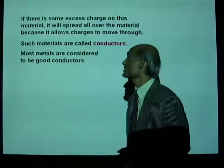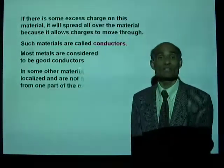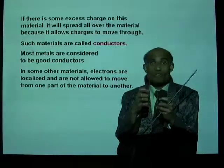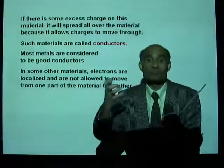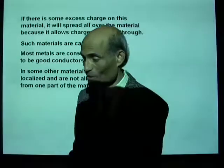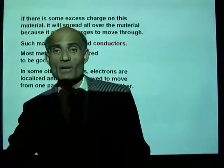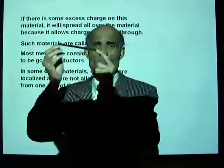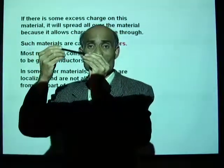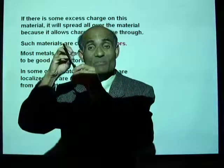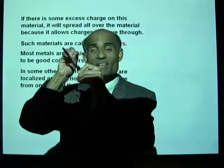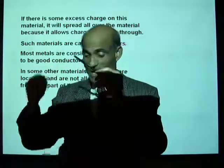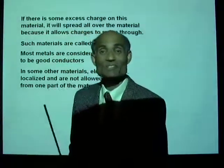Most metals are considered to be good conductors of electric charges. In some other materials, electrons are localized and are not allowed to move from one part of the material to another. A plastic pen is a good example of such a material — the electrons in the atoms are localized and are not allowed to move about. Such a material is an insulator.